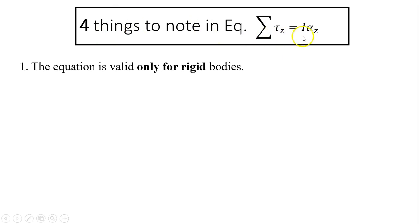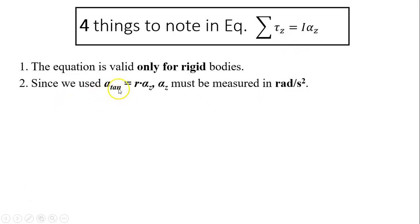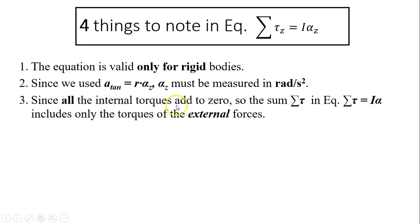There are four things to note in this equation. First, the equation is valid only for a rigid body — we assume all particles must have the same acceleration. If the body is fluid, this equation will not hold. Second, since we use a_tangential equals R times alpha_z, alpha_z must be measured in radians per second squared. Third, all internal torques add to zero, so the sum in this equation includes only the torques due to external forces.